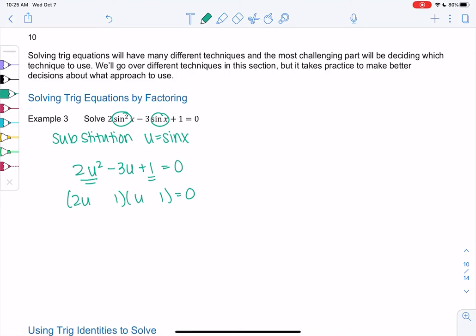We'll have to be 2u and u because that's the only way to make 2u squared, and we'll have to do 1 and 1 to make 1, and it looks like they'll have to both be subtraction. So we'll get 2u minus 1 equals 0 and u minus 1 equals 0. And then we'll just back substitute, we'll put the sine back in to solve.